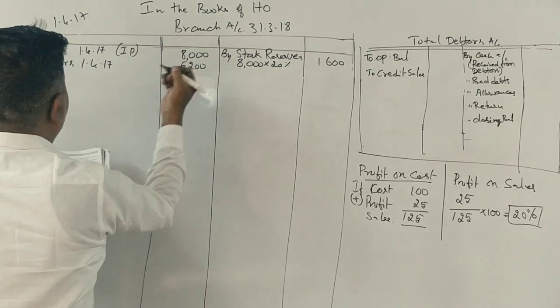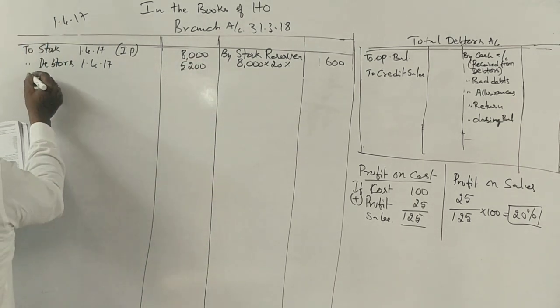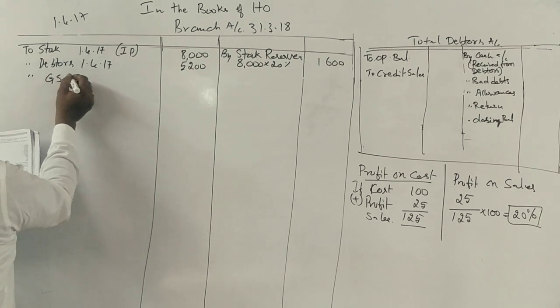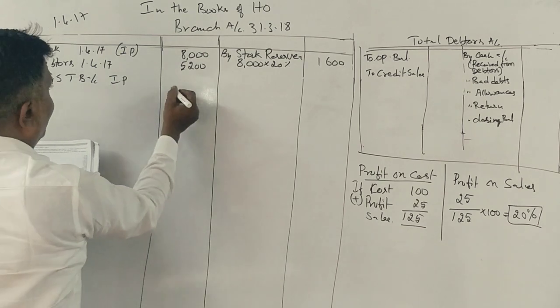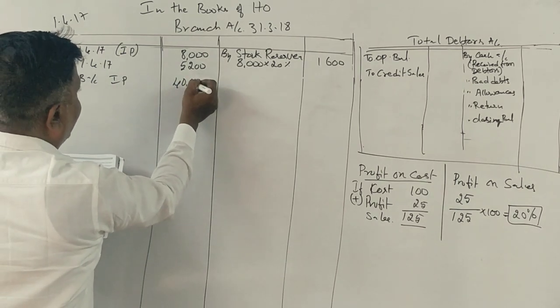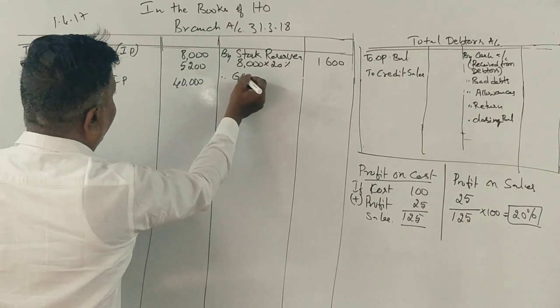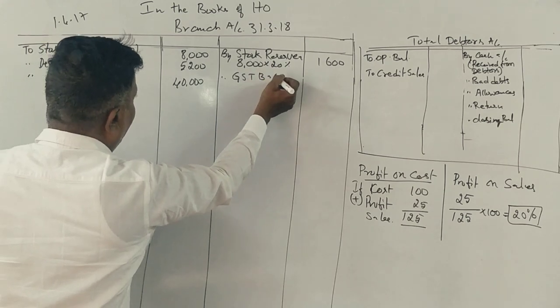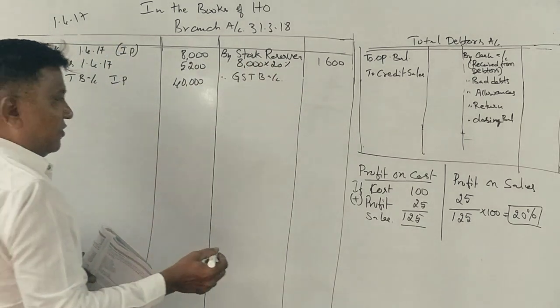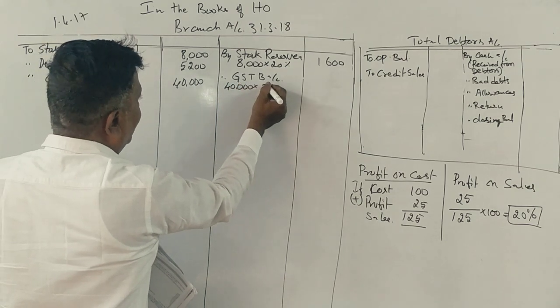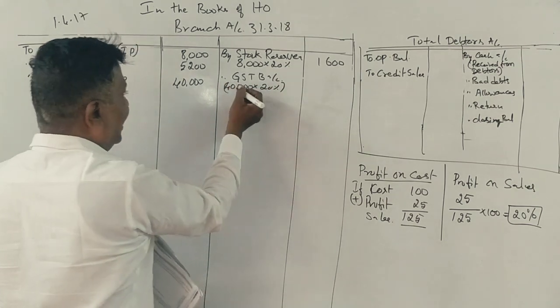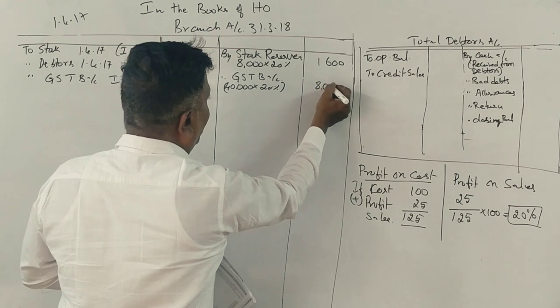Next, goods sent to branch at invoice price is 40,000. This goes to the GSTB account. The profit portion is 8,000 rupees, which is 20% of sales.